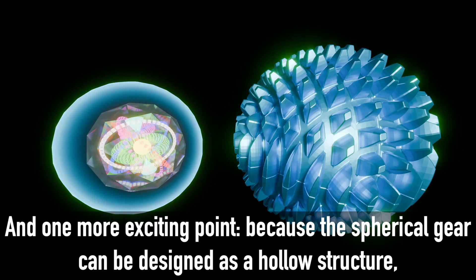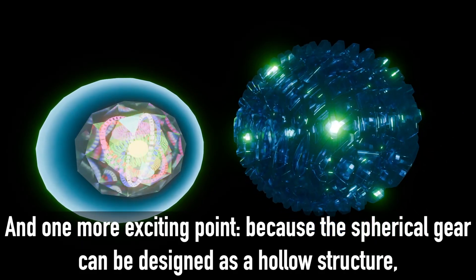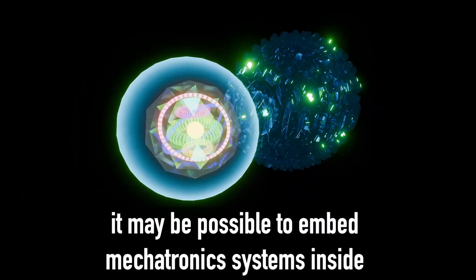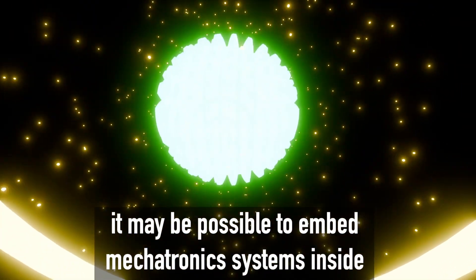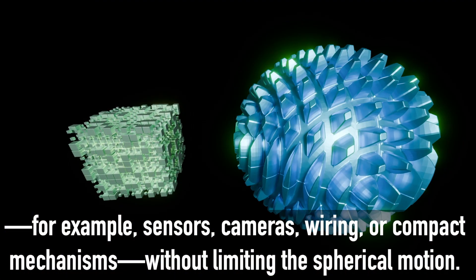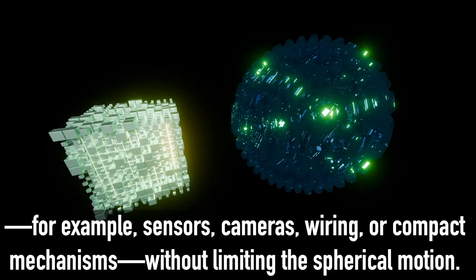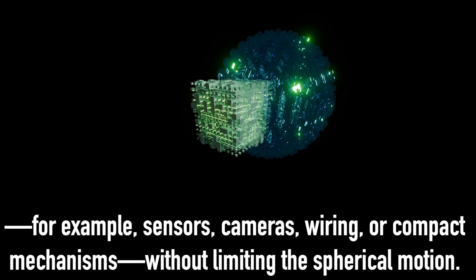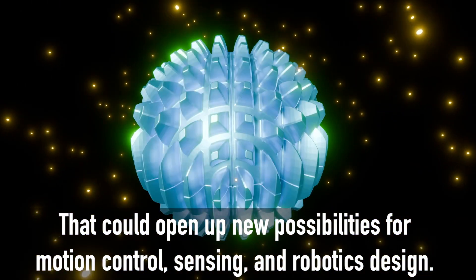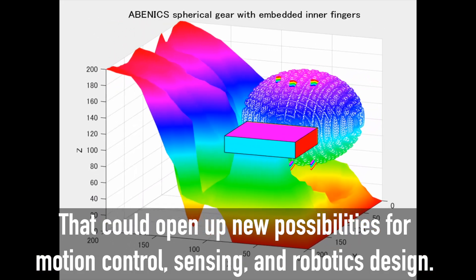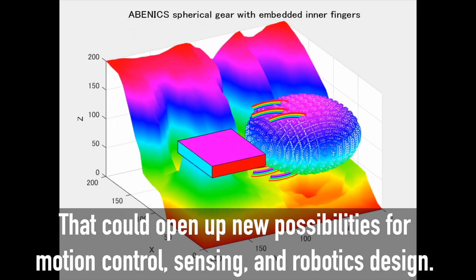And one more exciting point. Because the spherical gear can be designed as a hollow structure, it may be possible to embed mechatronic systems inside. For example, sensors, cameras, wiring, or compact mechanisms without limiting the spherical motion. That could open up new possibilities for motion control, sensing, and robotics design.